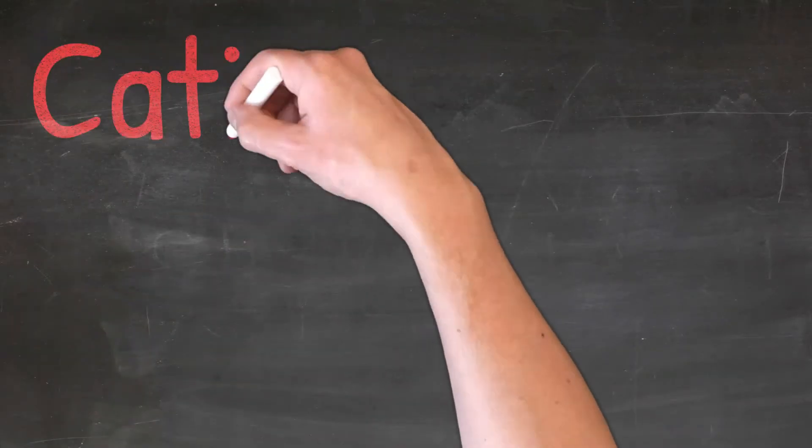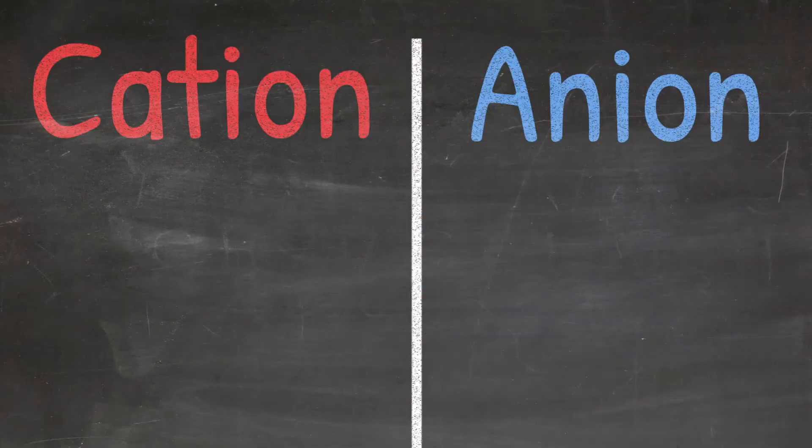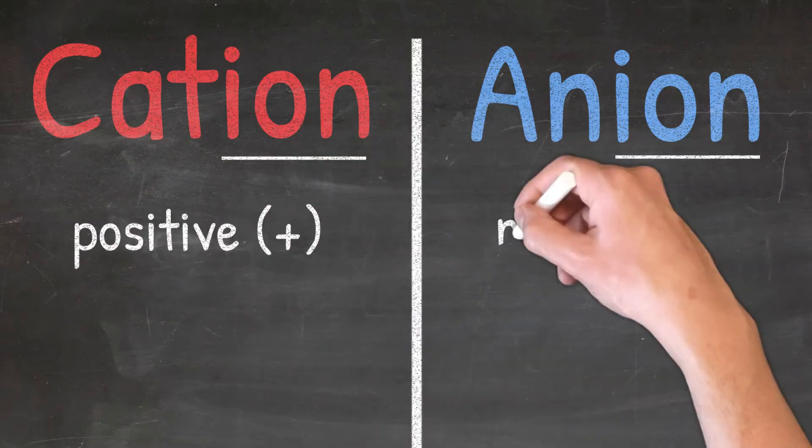Cations and anions are simply atoms with a charge. This is easy to remember as they both have the ending ion. The difference between a cation and anion is what charge they have. Cations are always positive, and anions are always negative.